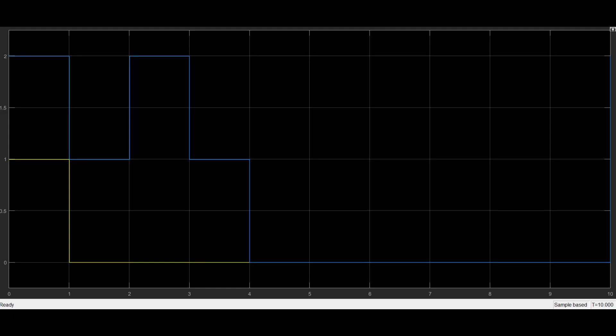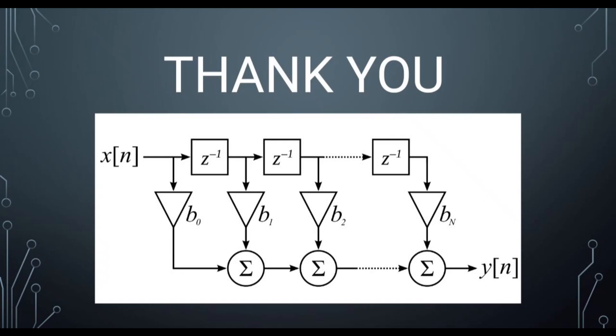In the oscilloscope display, the input variables in the Constant block are shown in blue, and the input sequence in the Repeating Sequence Staircase is displayed in yellow. Thank you.